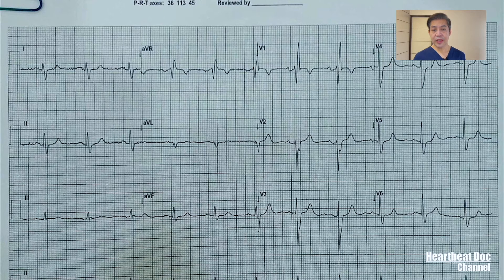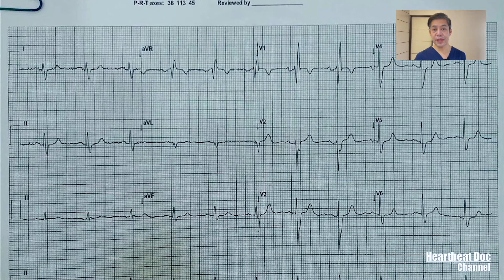The second reading is possible left atrial abnormality or enlargement. Looking at lead 2 again, you will see that the P wave is notched and wide, and the terminal portion in lead V1 is prominent and deeper than 0.03 millivolts. Those characteristics support the left atrial abnormality.